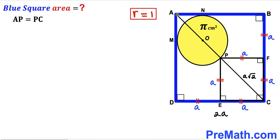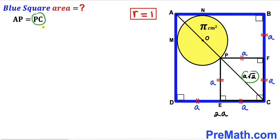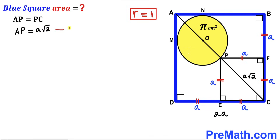Making an observation, segment AP equals segment PC. We know PC equals a√2, so substituting that value, AP is also equal to a times the square root of 2. I'll label this as equation number one.